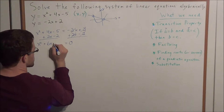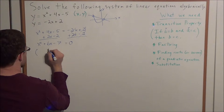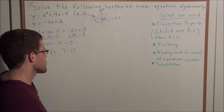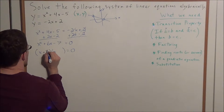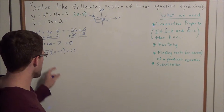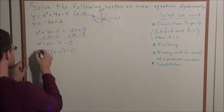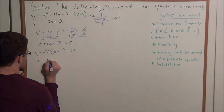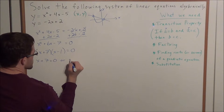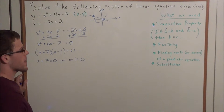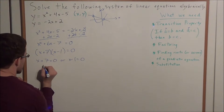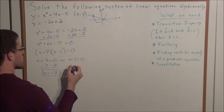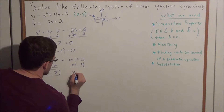Now the factoring stage: we need two numbers that sum to positive 6 and multiply to negative 7. That gives us the factors x plus 7 and x minus 1, so 0 equals x plus 7 times x minus 1. Setting each factor equal to zero: x plus 7 equals 0 gives x equals negative 7, and x minus 1 equals 0 gives x equals positive 1.